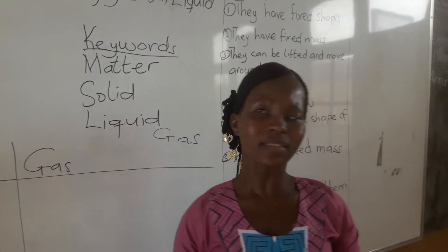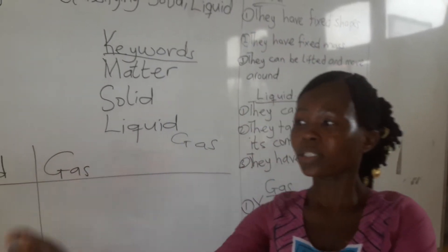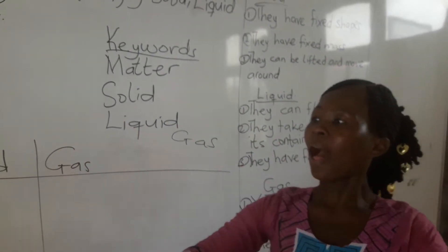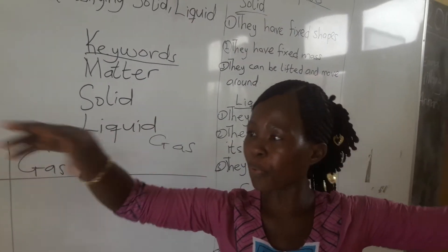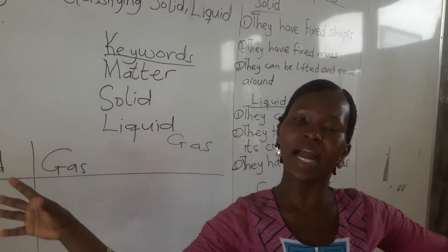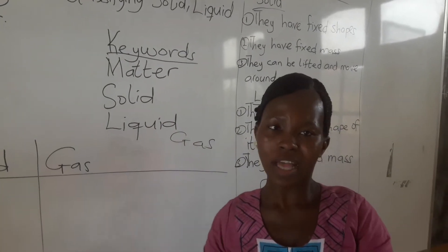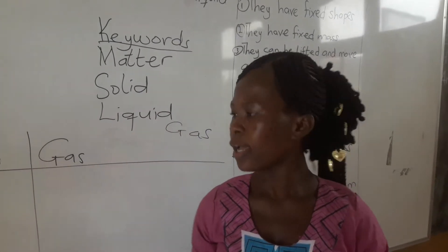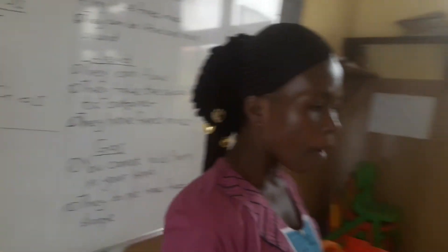Gas are substances which are widely separated and can move about freely. Now, let's look at some materials that we have.